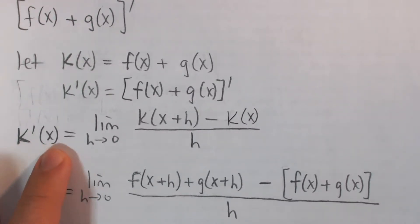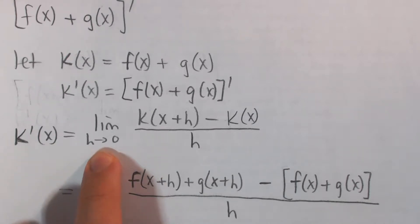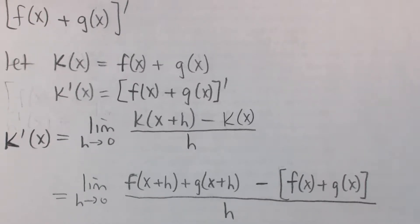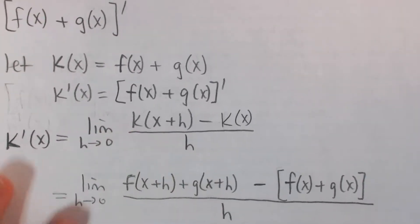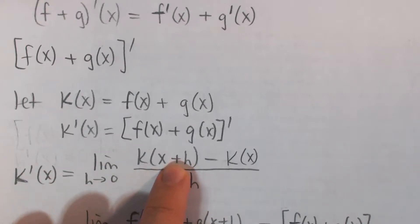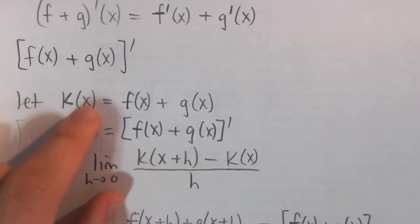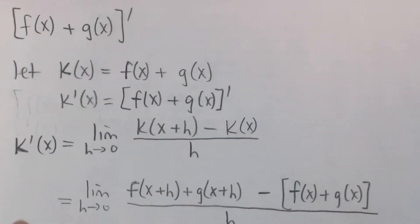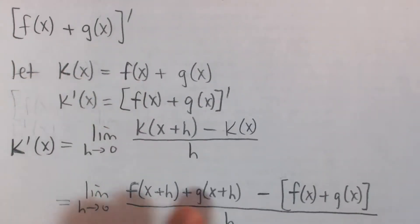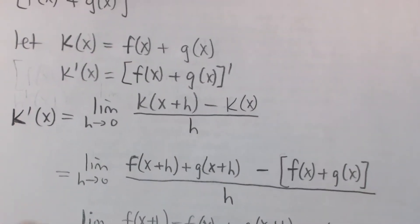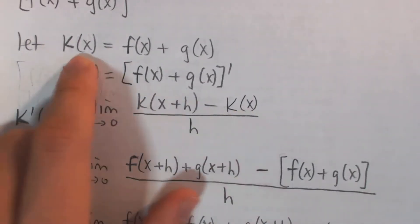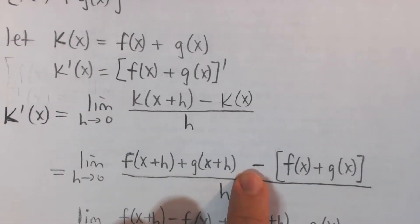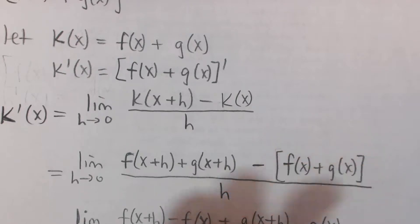Take the derivative of k of x using the limit definition: it's the limit as h approaches zero of k of x plus h minus k of x, all divided by h. Now k of x plus h means we plug in x plus h for x, so it's f of x plus h plus g of x plus h. And k of x by definition is f of x plus g of x. Don't forget the minus sign — we're subtracting this entire thing.